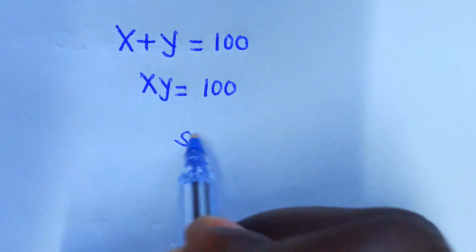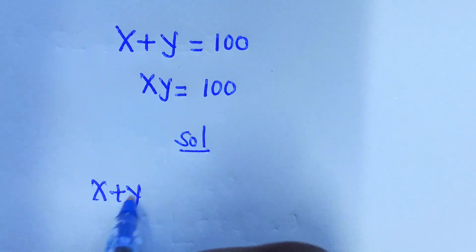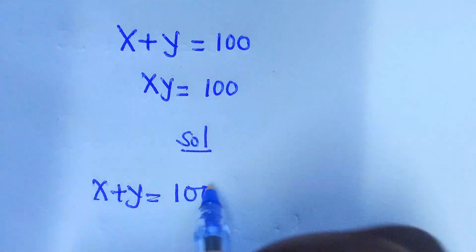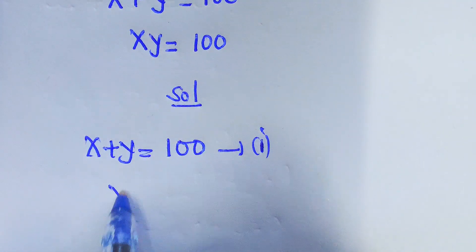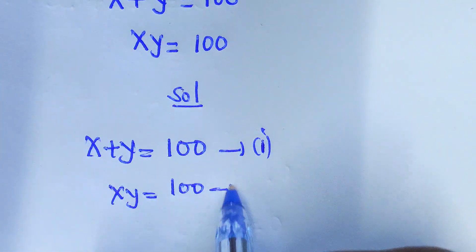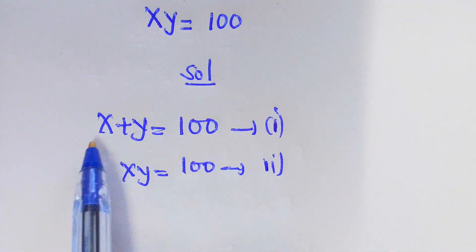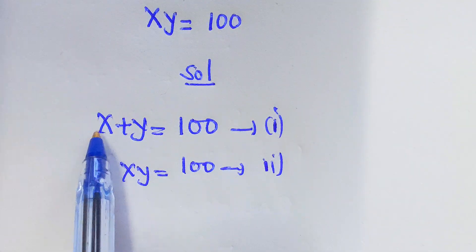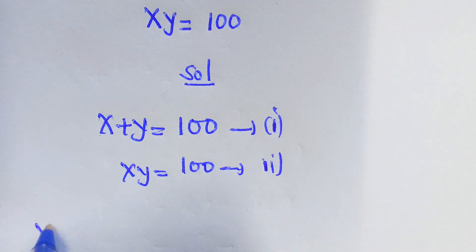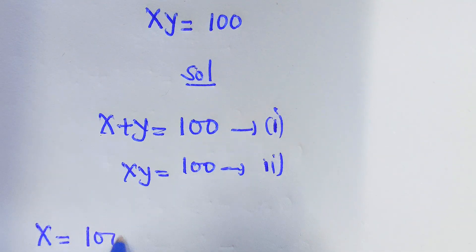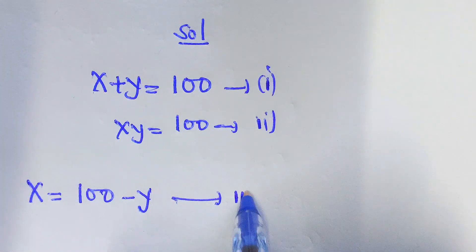And the solution right here: we have to copy what we have. We have x plus y equal to 100 as equation 1. And of course we have x times y equal to 100 as equation 2. Down here we can find x in terms of y or y in terms of x. So x will be 100 minus y, and this is equation 3.